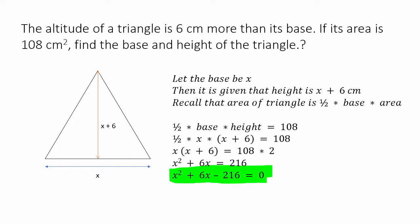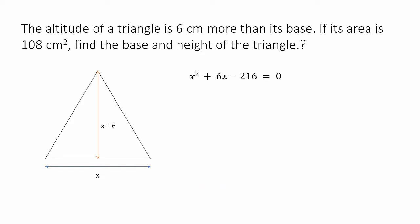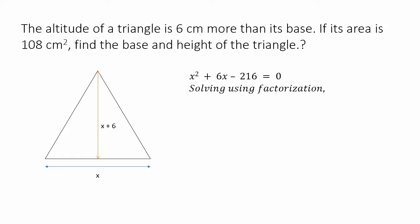Making it a quadratic equation, we have x squared plus 6x minus 216 equals 0. So this is a quadratic equation. If we solve this equation, we will find the value of x. Let us solve using factorization.